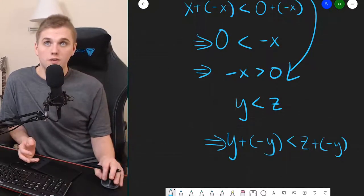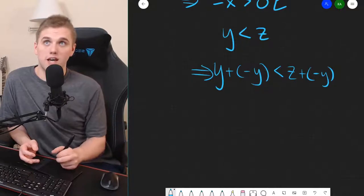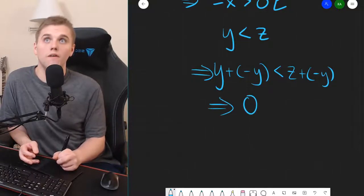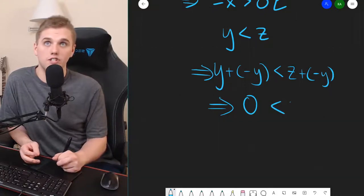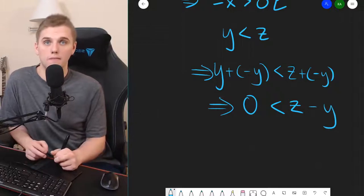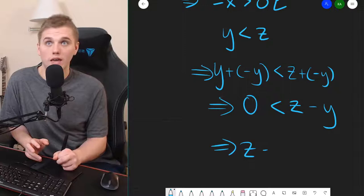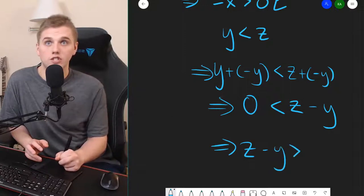Using the rules of a field, I can simplify the left-hand side to be zero, and the right-hand side is just z minus y. And so, this means that z minus y is greater than zero.